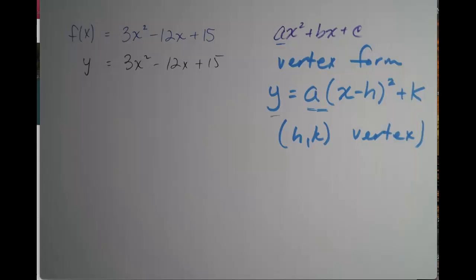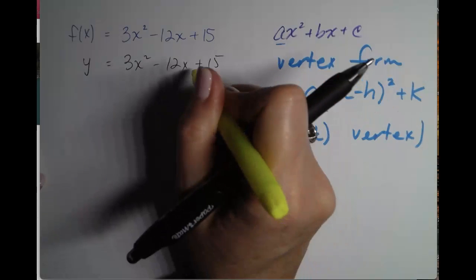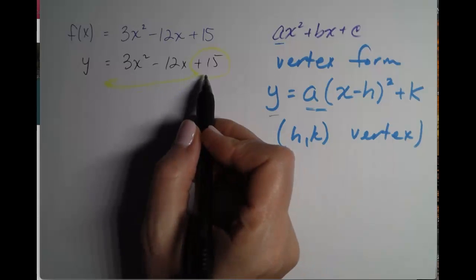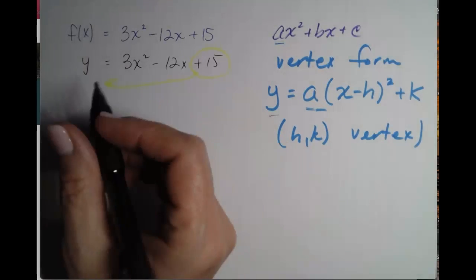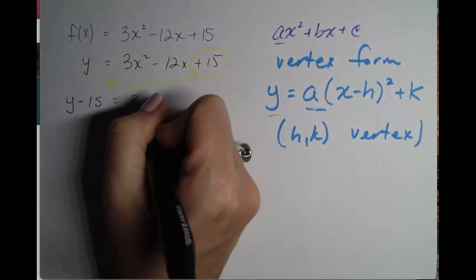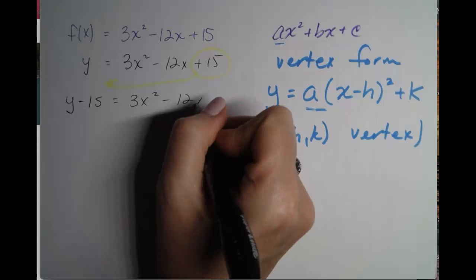Next step, we are going to take the constant, which is 15, and we're going to move it out of the way to give us a little more room to complete the square. So if 15 is positive on the right, it will be negative on the left. So y minus 15 equals 3x squared minus 12x.